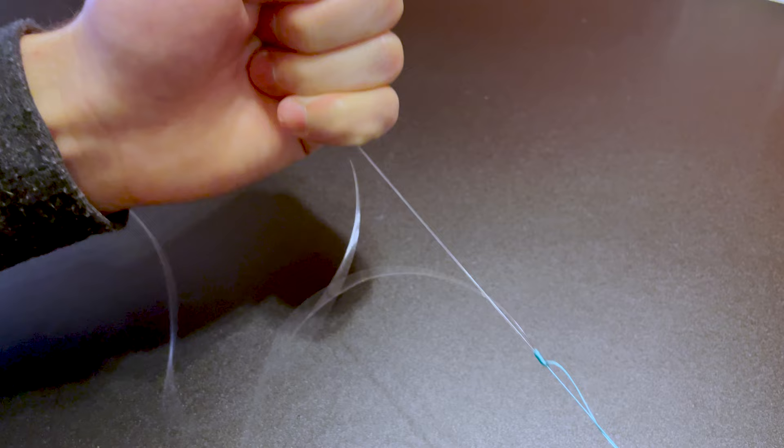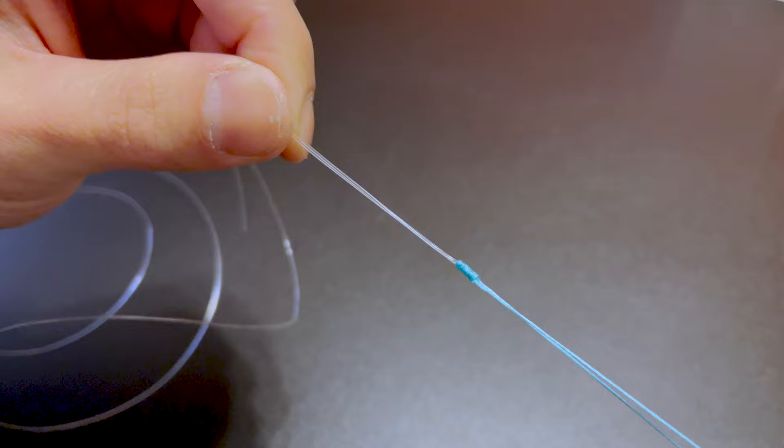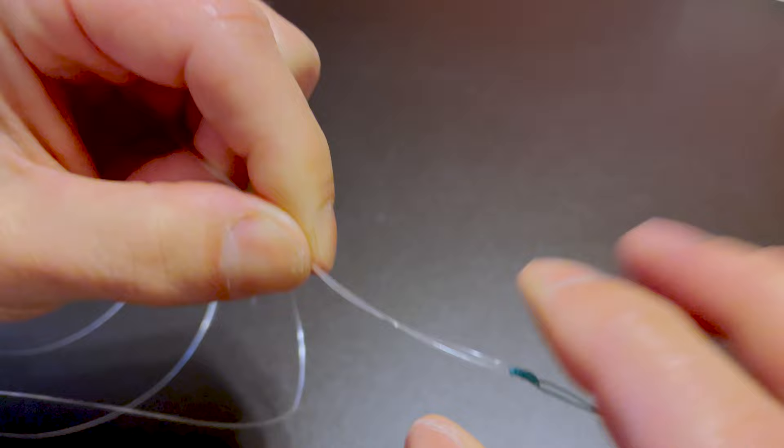Right there is a very tiny knot and it's super strong. I love this because the braid really just cinches down right over. You can't even see the monofilament or your leader line.